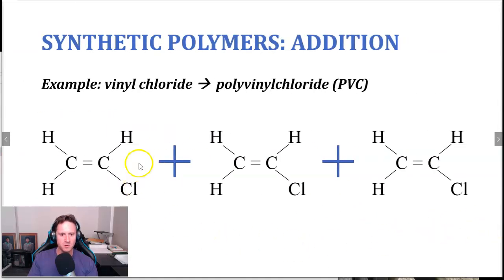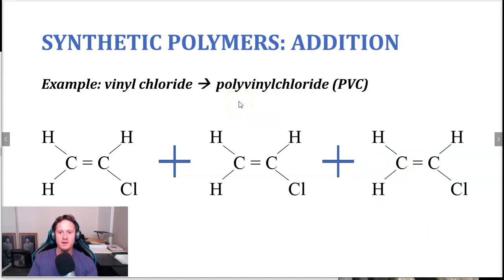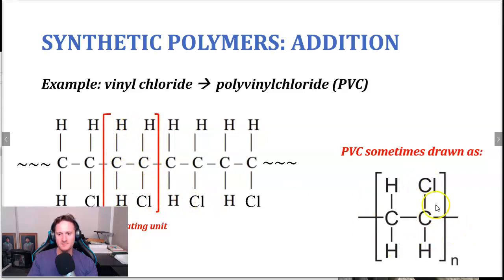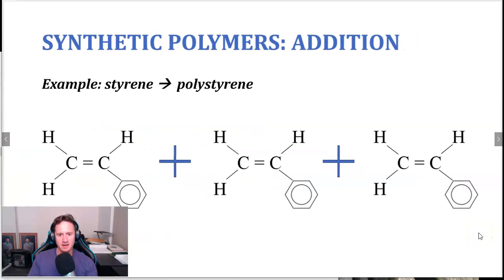Another example is vinyl chloride — the monomer is an alkene with a chlorine atom, which is where the chloride comes from. The polymer is polyvinyl chloride, which is PVC. You may have heard of PVC piping — it's very strong, inflexible, and resistant to weathering. The repeating unit has H and Cl alternating. You might have to draw the PVC polymer or recognize it represented with brackets and n in an exam.